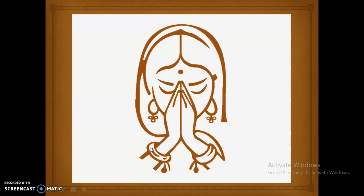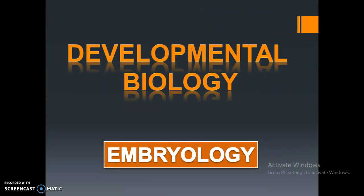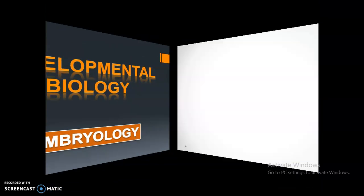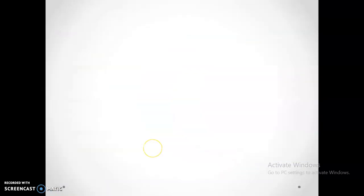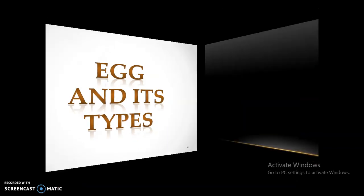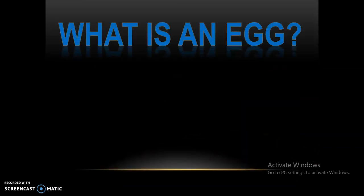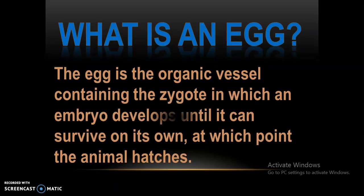Hello friends, welcome to Easy Learning. Today we will be learning about eggs and their types, which is related to developmental biology — it is embryology. First, let us understand what is an egg. The egg is an organic structure containing the zygote, in which an embryo develops until it can survive on its own, at which point the animal hatches.